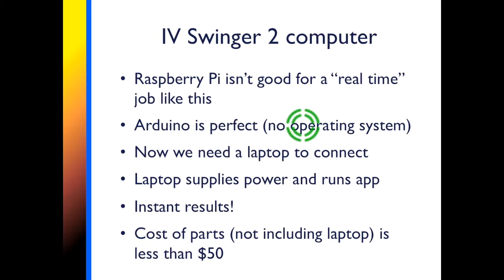The Raspberry Pi that we used for IV Swinger 1 isn't really very good for a real-time job like this. It might decide to go off and do something else while we're trying to do this very time-sensitive job. An Arduino is actually perfect. It doesn't have any operating system. But we do now need a laptop to connect to it. The laptop supplies the power and we can run the app right on the laptop, so we get instant results, which is one of the really big value adds. And the whole cost of parts, not including the laptop, is actually less than $50.